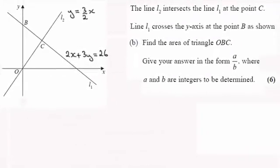Hi there. Welcome to the second part of this question. Now in the first part of the question we were given that the equation of this line L1 was 2x plus 3y equals 26 and we had to work out the equation of the line L2 when it was perpendicular to L1. And we found out that it was y equals 3 over 2x.